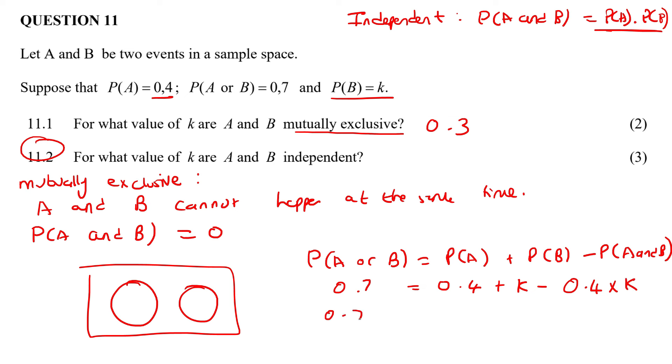And so now we can say 0.7 equals 0.4 plus K minus 0.4K. These two together will become 0.6. Some learners get very confused with that. Remember, there's a one here. So one minus 0.4 is 0.6. I'm going to take this over to the other side. So that'll become 0.3.